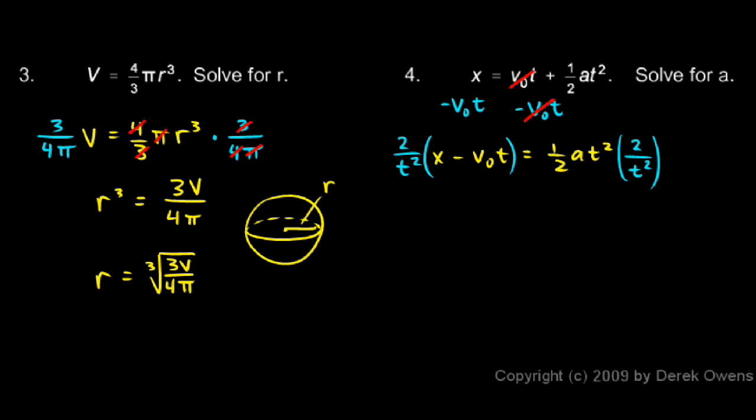And then on the right, you can see the 2 down below and up top cancels out. And the t squareds cancel out. And I'm left with a all by itself. And that a will be equal to all of this. So a equals, and I'll write it like this. So I'll write 2x minus v0t over t squared. Now it is solved for a.